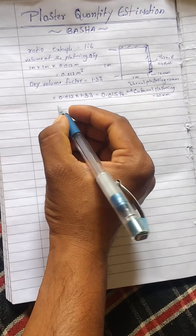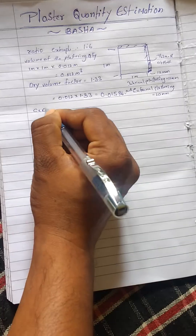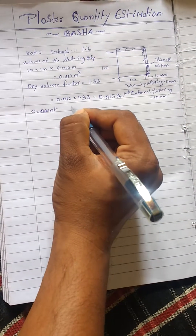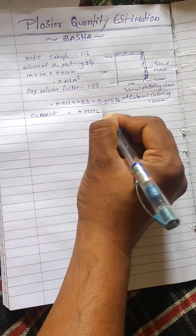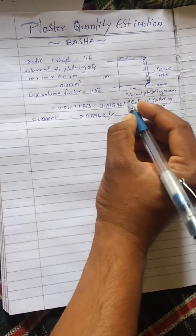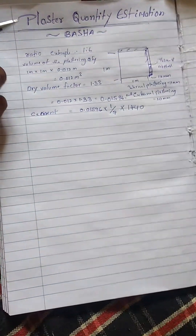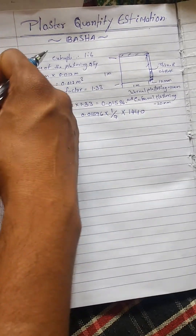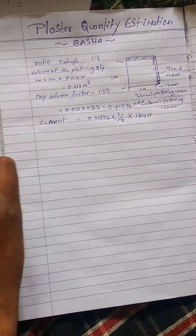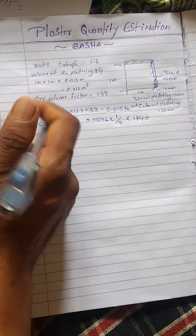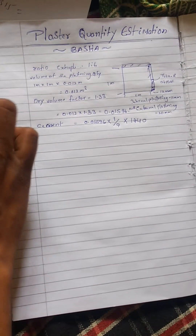The dry volume of one square meter — suppose cement calculation. Cement is equal to 0.01596, multiplied by one part of the cement, one divided by total seven parts. Cement density is 1440 kg per cubic meter, the unit weight of cement is 1440 kg per cubic meter. So one by seven into 0.01596 equals approximately 3.283.